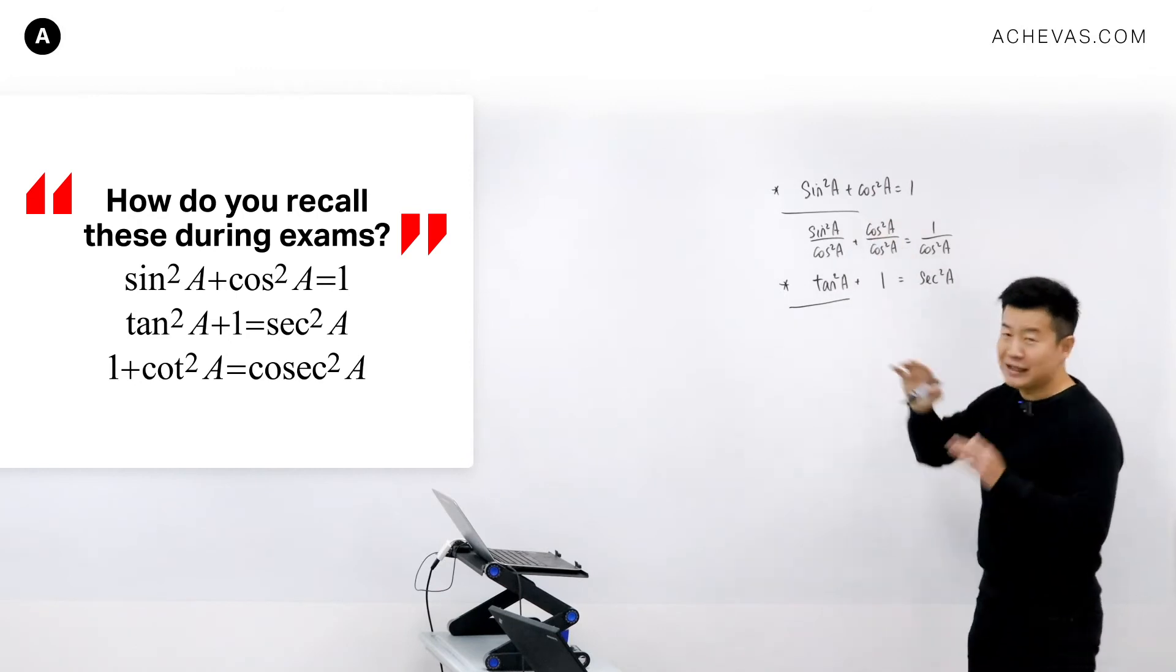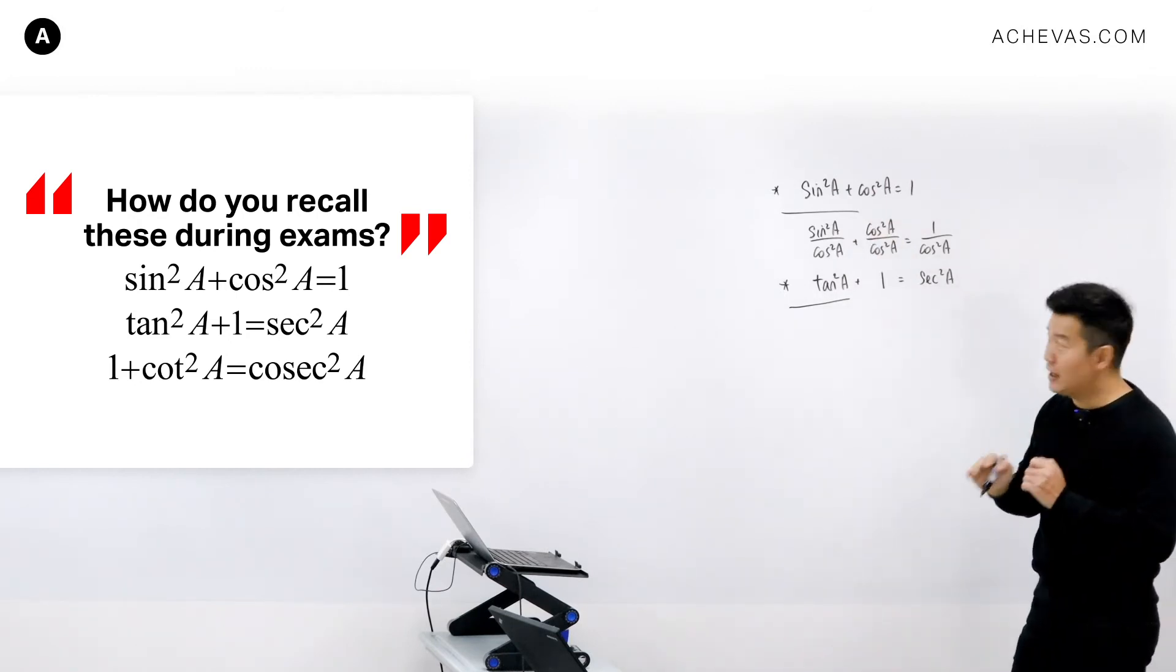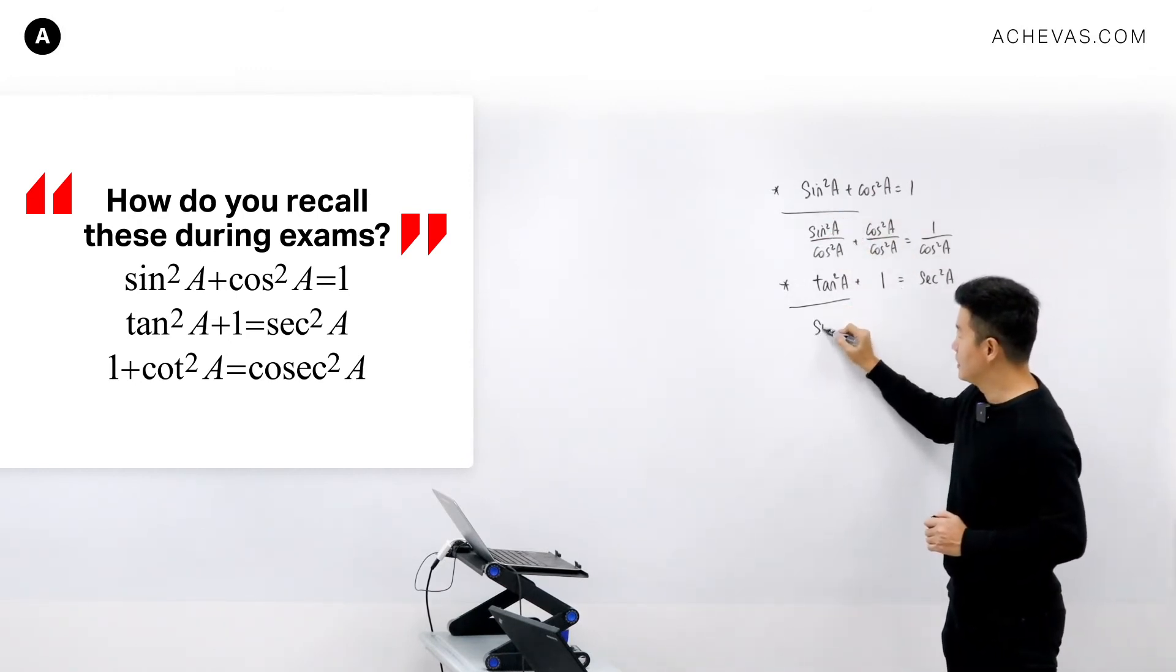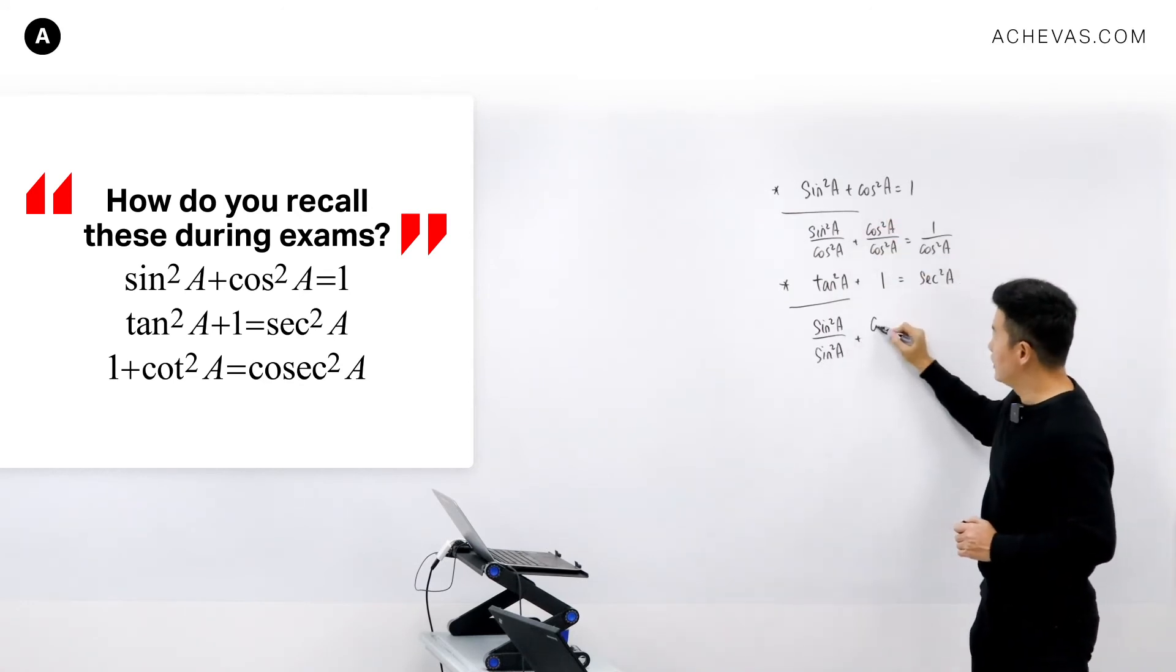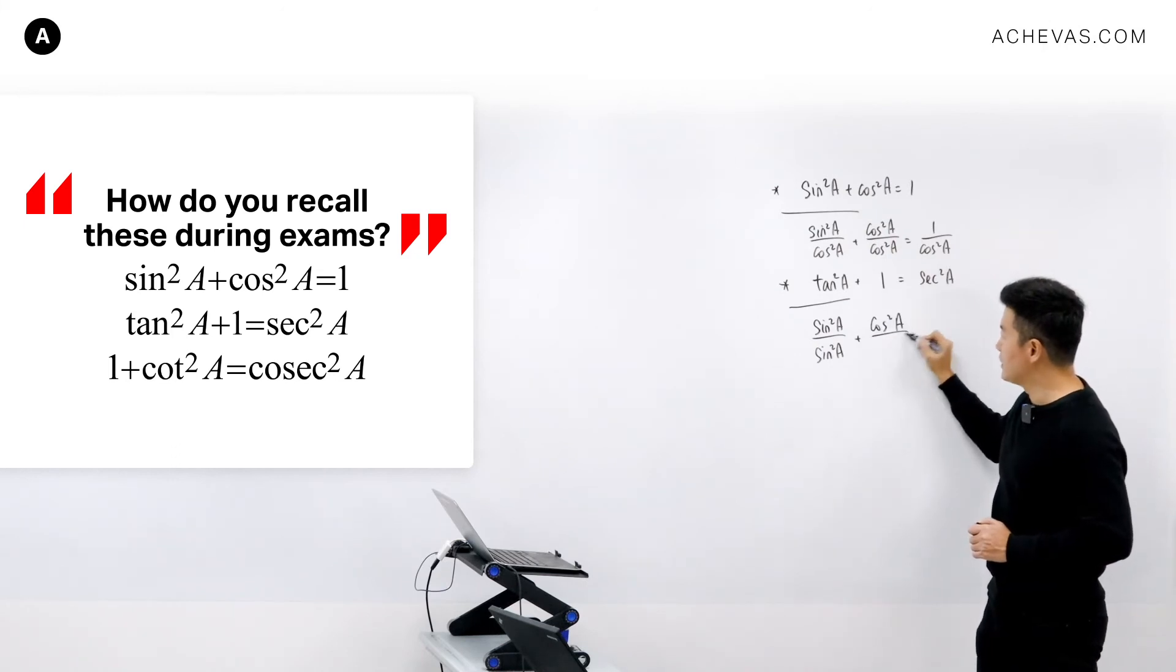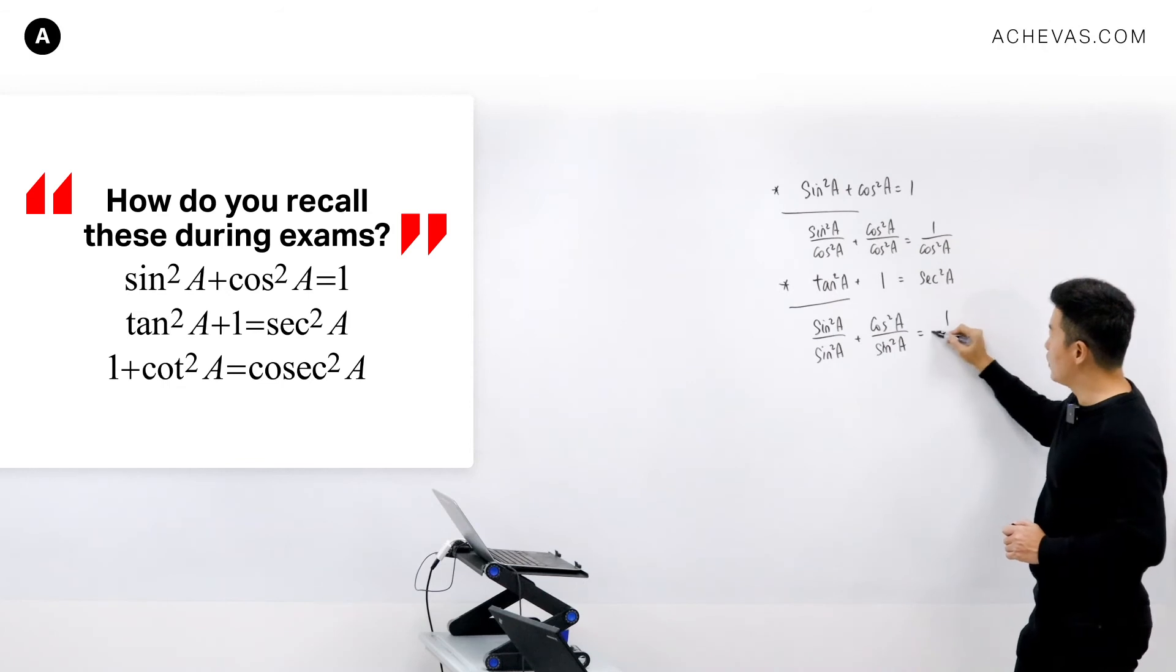And if I were to take this and divide it throughout by sin²A, then it will become sin²A divided by sin²A. I will have cos²A divided by sin²A, and this will be 1 divided by sin²A.